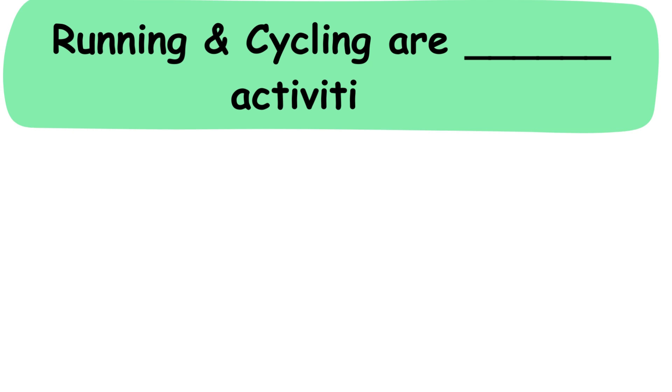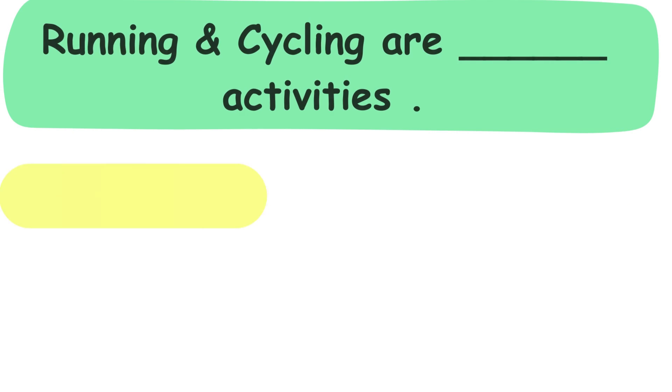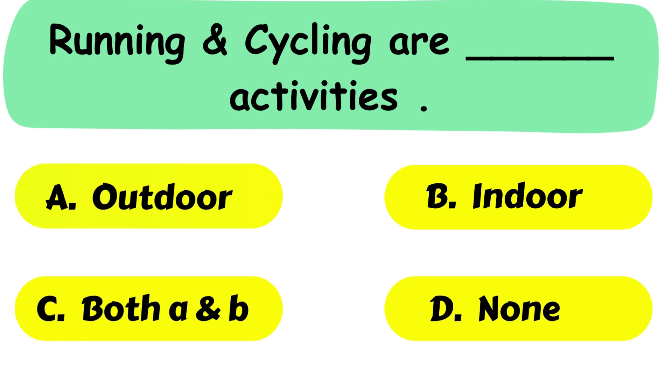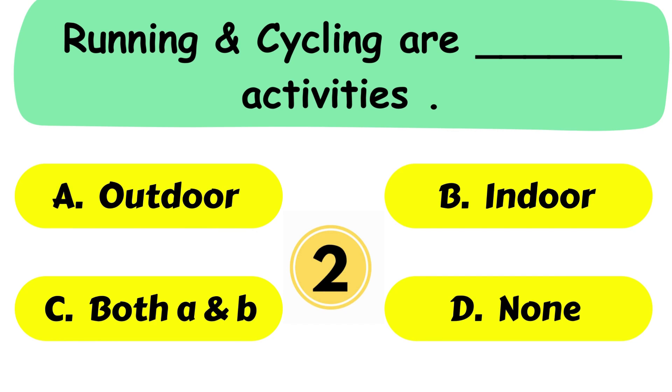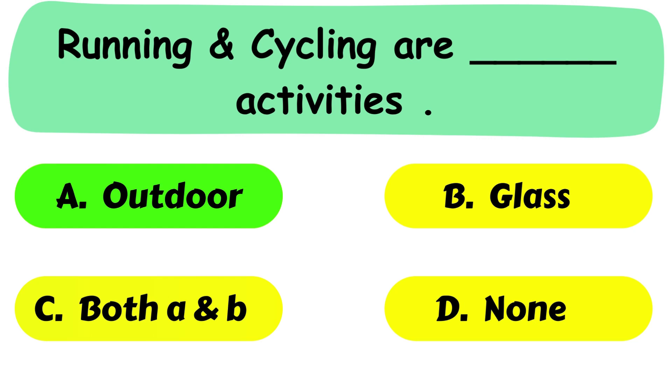Question No. 31. Running and cycling are dash activities. A. Outdoor. B. Indoor. C. Both A and B. And D. None. The correct answer is option A. Outdoor.